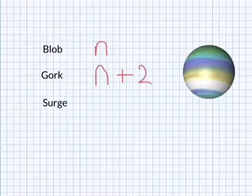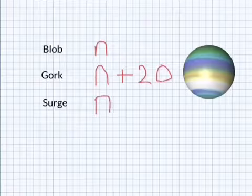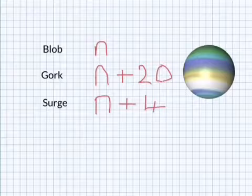So, we've got to write N plus 20. Those two think they're brilliant, but Surge, she's an expert jumper and she can jump an extra 20 metres compared to Gork. So, she can jump 40 metres higher than Blob.